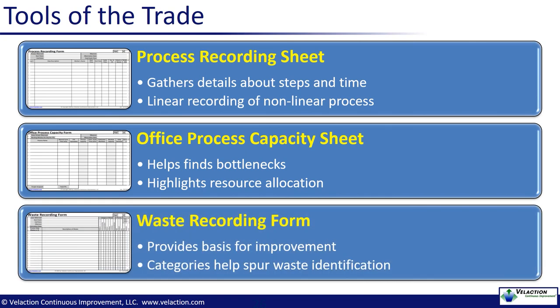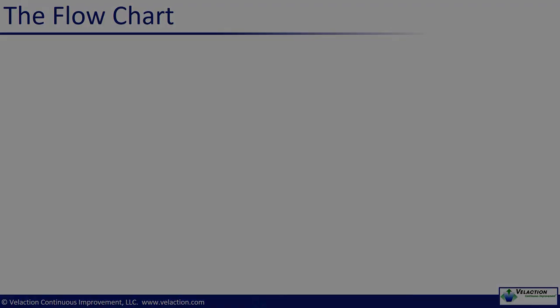One of the more useful tools is the Waste Recording Form. This tool is simply a log of all the things you see that take more effort than they should. Our form provides a place to categorize the types of waste. This helps when you are making improvements, but also triggers ideas as you record waste. In addition, there is a space to make a quick assessment of how important fixing the problem is, and how hard it would be to do so. Another outstanding tool is the flowchart.